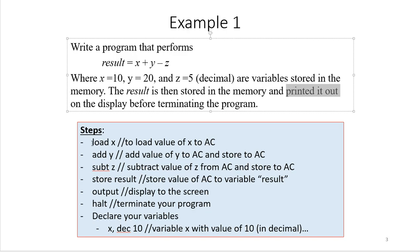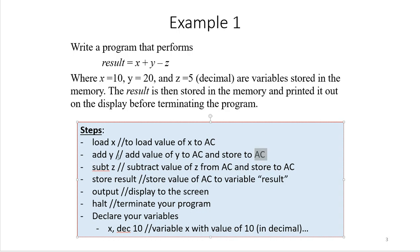Here are the steps we're going to do. First, we load X into the AC, then we add Y to the AC — performing X plus Y — and store it in the AC. Then we subtract Z, giving us X plus Y minus Z as the outcome. Next, we store the value in the AC to the result variable, output the value of the AC to the monitor, and then terminate the program.